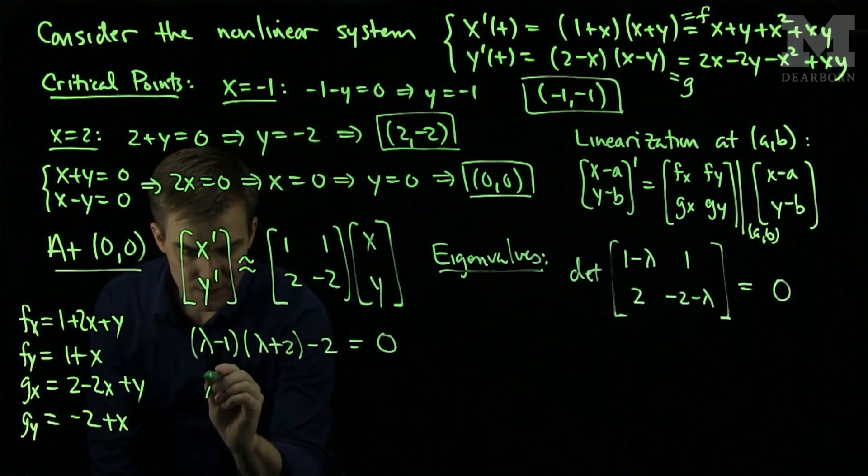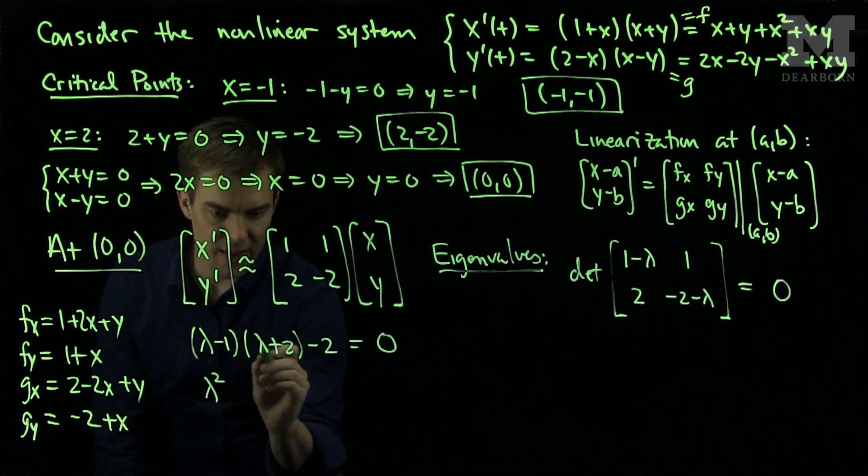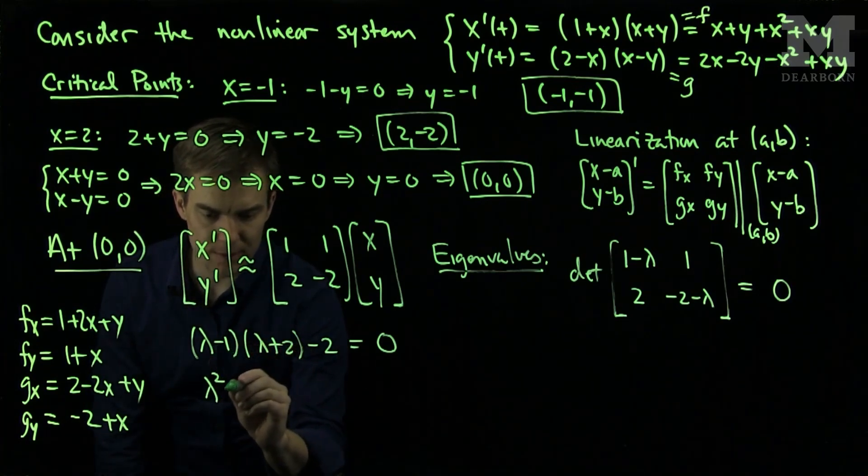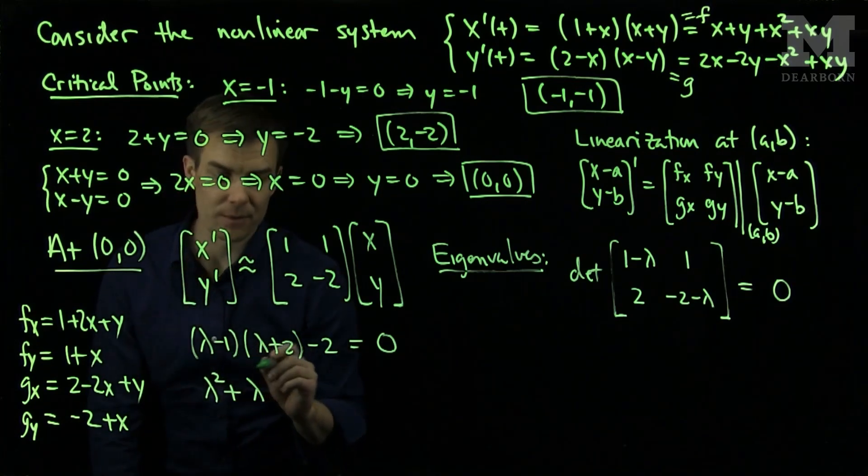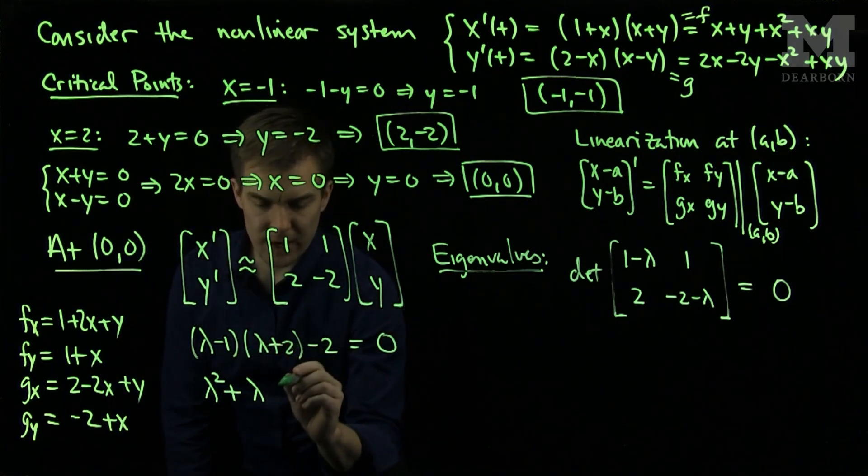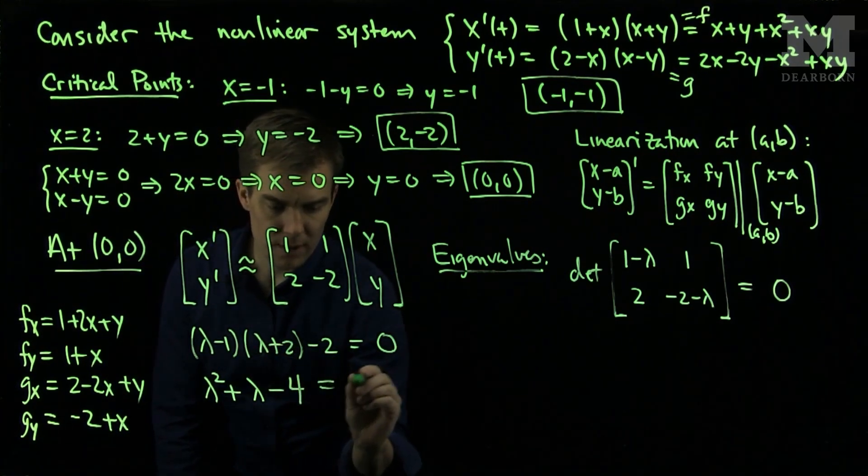Simplifying this out, I will have lambda squared, a negative lambda and a plus 2 lambda, so that will be a plus lambda, and I'll have a minus 2 and a minus 2, which is a minus 4 equals zero.